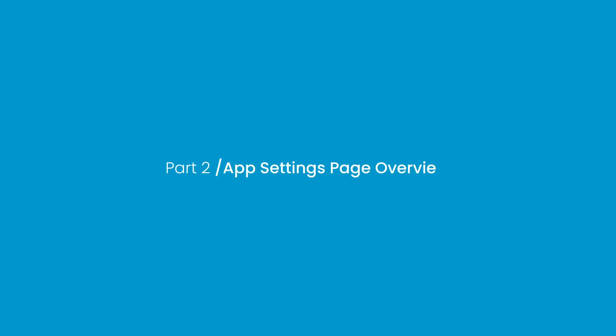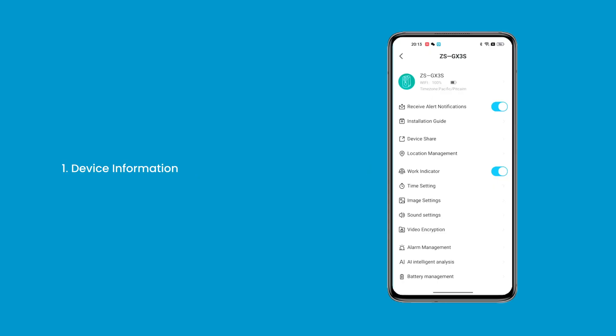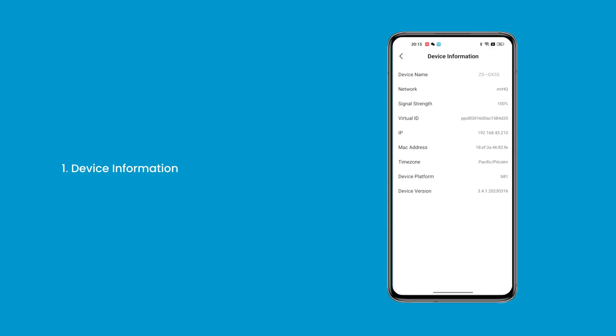Part 2: App Settings Page Overview. 1. Device Information — you can retrieve the fundamental information of the device on this page.